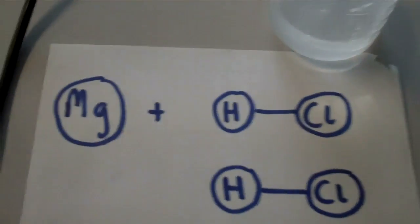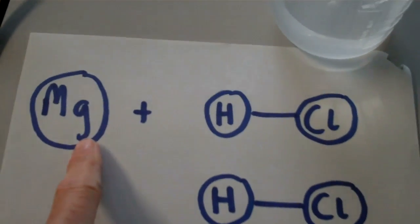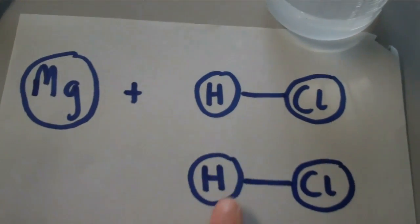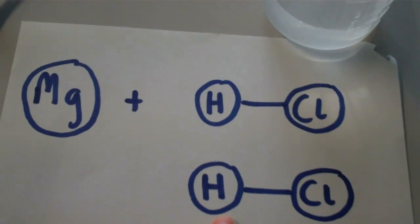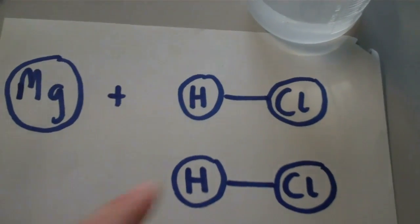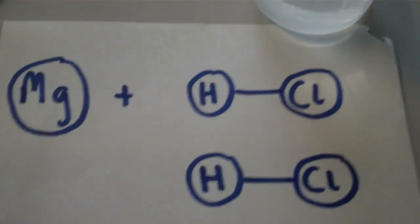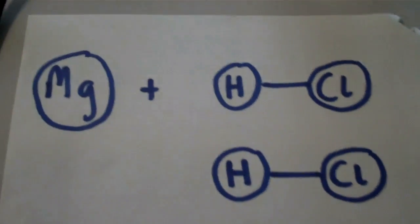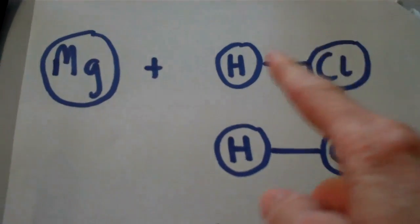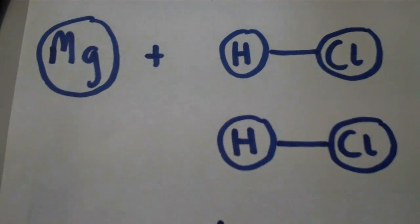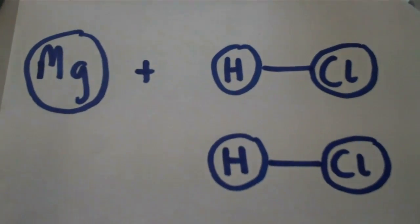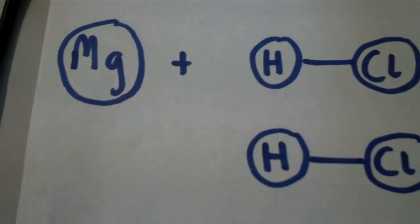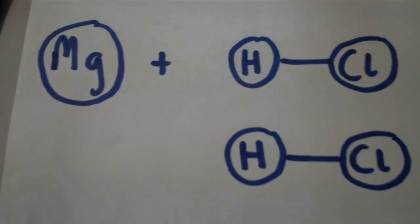For this reaction to occur, the magnesium has to collide with the acid molecules. As you heat up a solution, the molecules in the solution are actually moving faster, so there's a greater chance of a collision.